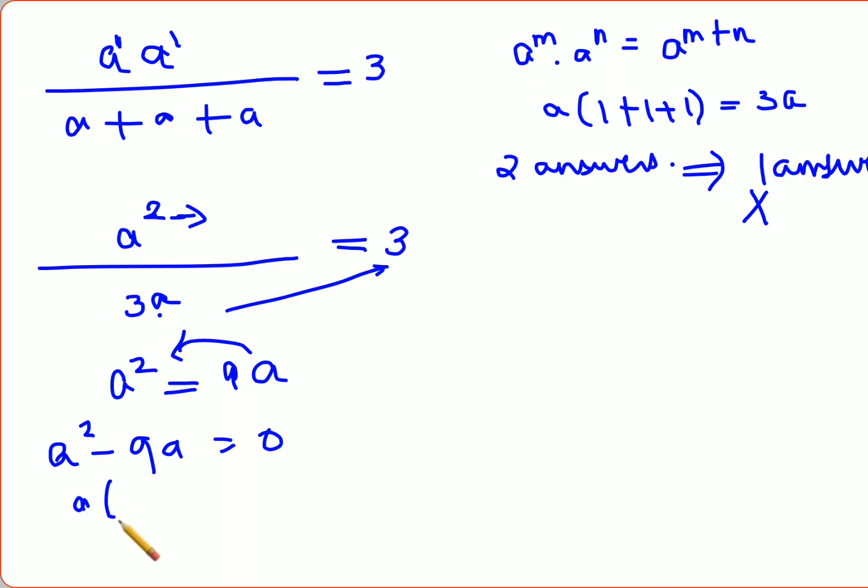Now what you can do next is you will take a out, and you will get a minus 9 equals 0.